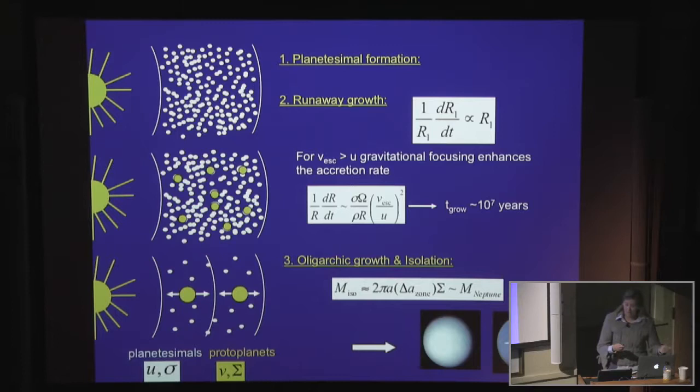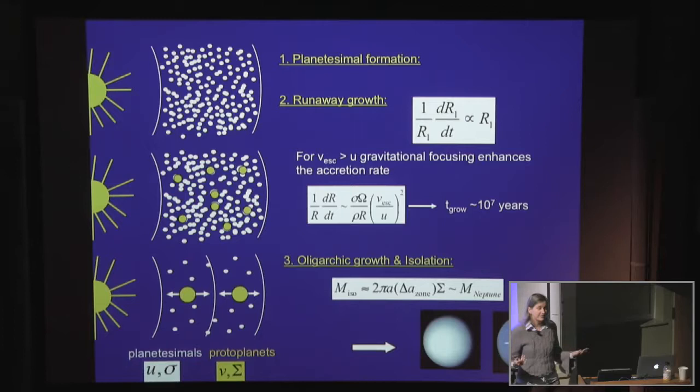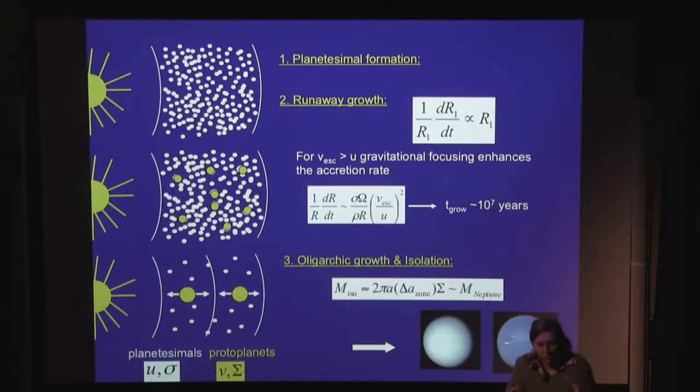The next stage identified to be important in planet formation is called runaway growth. It's called runaway growth because during this growth, the rate at which a body will double its own mass or size is proportional to its own size. So the growth rate is proportional to the radius — the bigger you are, the faster you grow. So if you are one body that's slightly bigger than the rest, you literally run away in size from all the other bodies in the system. That's why we call it runaway growth.